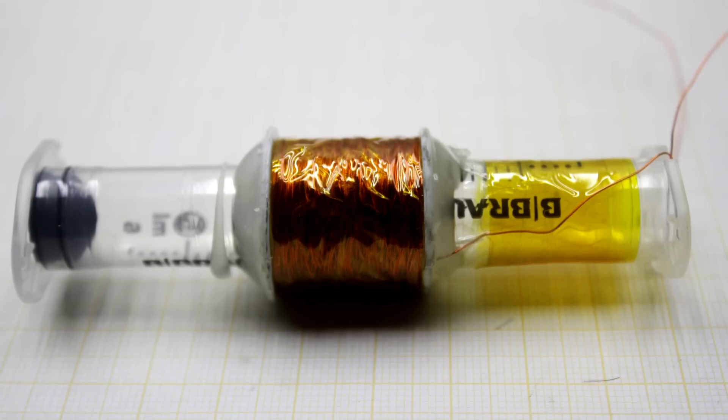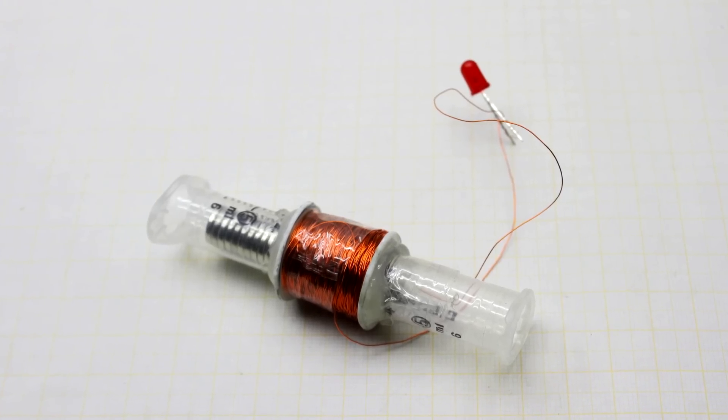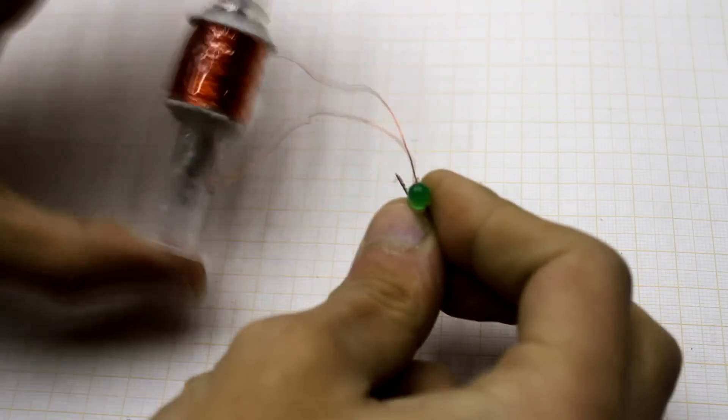Next, the assembled generator should be tested. We clean the lacquer from the ends of the wires, connect the LED and shake.